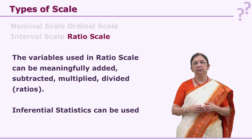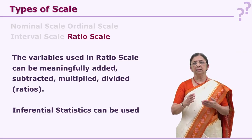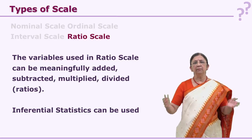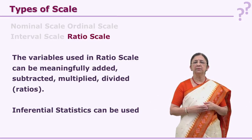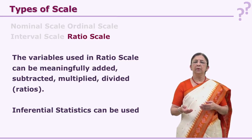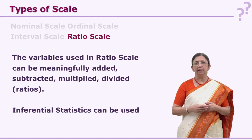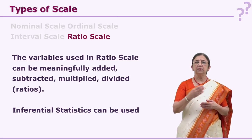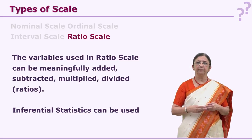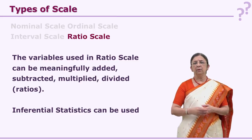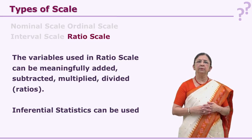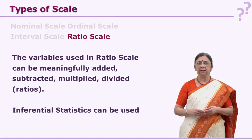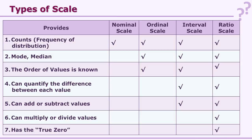If you refer to nominal scale — can you add gender responses from different people? You cannot, because nominal scale does not give you the facility of adding or subtracting, which is possible with ratio scale. A lot of inferential statistics can also be used on ratio scale. Let us take a comparative view of these four types of scales: nominal scale, ordinal scale, interval scale, and ratio scale.